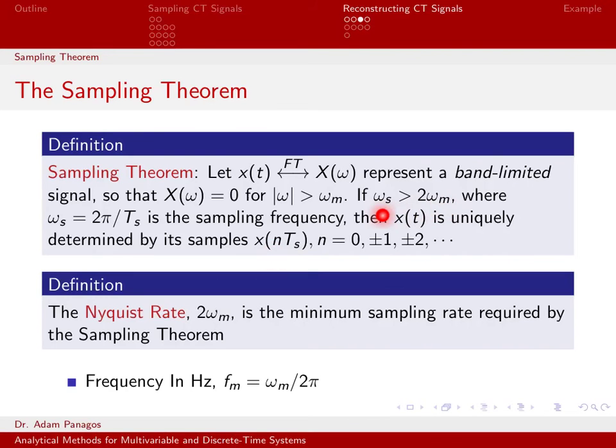One thing that's interesting about the sampling theorem is it gives us a lower bound. It tells us you need to sample at two times ωₘ or greater. Typically, as you sample more and more, that requires more memory on your hard drive to store these samples. So there's usually a tradeoff between wanting to sample a lot but also not wanting to have to store a lot of data to disk. When you sample at the lower bound—so at two times ωₘ—that would be the slowest you should ever sample. And that exact sampling rate is what is called the Nyquist rate.